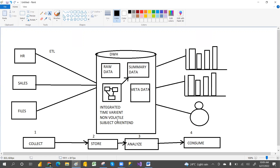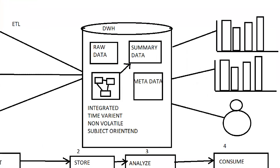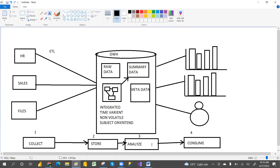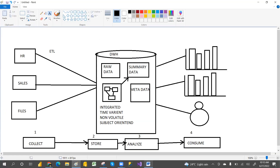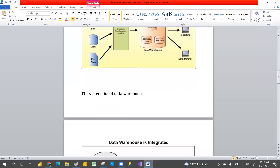There are four key characteristics of a data warehouse: Integrated, Time Variant, Non-Volatile, and Subject-Oriented. I'll give simple examples and diagrams for each so that you can understand them clearly.